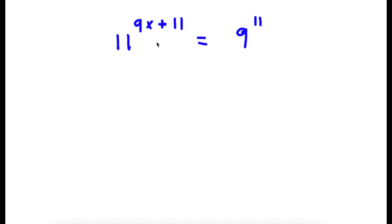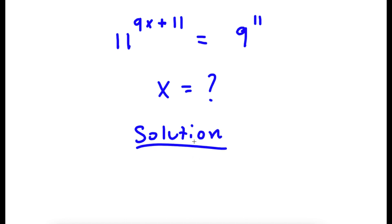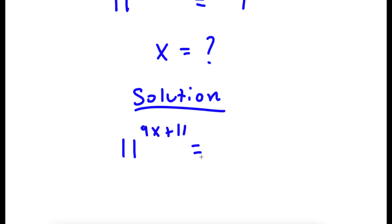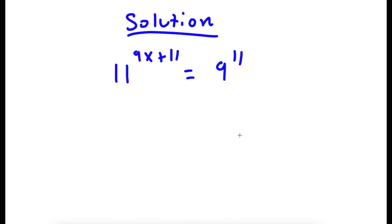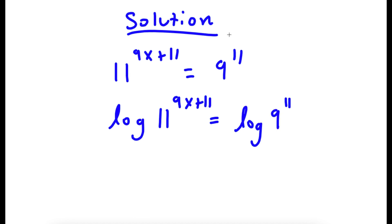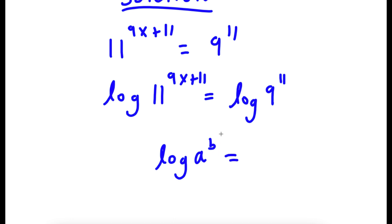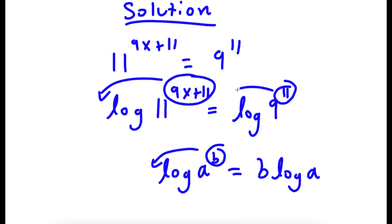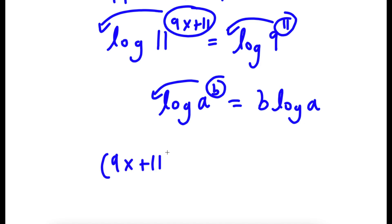So in this problem, I have 11 to the power of 9x plus 11 is equal to 9 to the power of 11. So I want to find the value of x here. For my solution, first start with 11 to the power of 9x plus 11 is equal to 9 to the power of 11. Now, if I take the log on both sides, I have log 11 to the power of 9x plus 11 is equal to log 9 to the power of 11. If I have something in the form log a to the power of b, I move b to the front, so it's equal to b times log a. So I can move 9x plus 11 to the front and 11 to the front, giving 9x plus 11 times log 11 is equal to 11 times log 9.